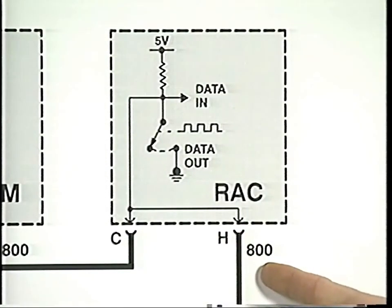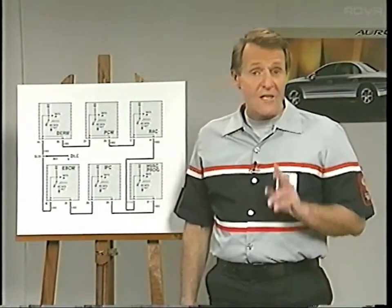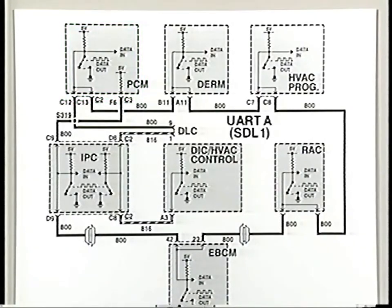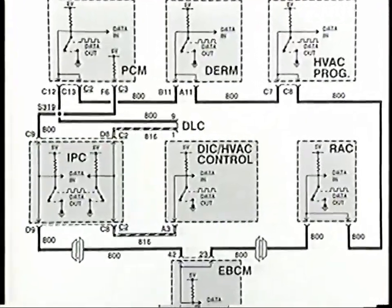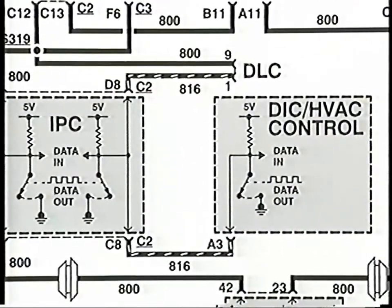Some modules on the EWERT line are in frequent communication with the master; others may not be. For example, in many systems the RAC module is included just so the bus can be used for programming keyless entry modules with their transmitters. Circuit number 800 is generally used for a vehicle's EWERT circuit. The Aurora actually has two EWERT lines. The primary circuit is the 800 line, and the PCM is its master — the manual calls this EWERT A, or Serial Data Line 1. The cluster is on this bus and also on the second EWERT bus, numbered 816.